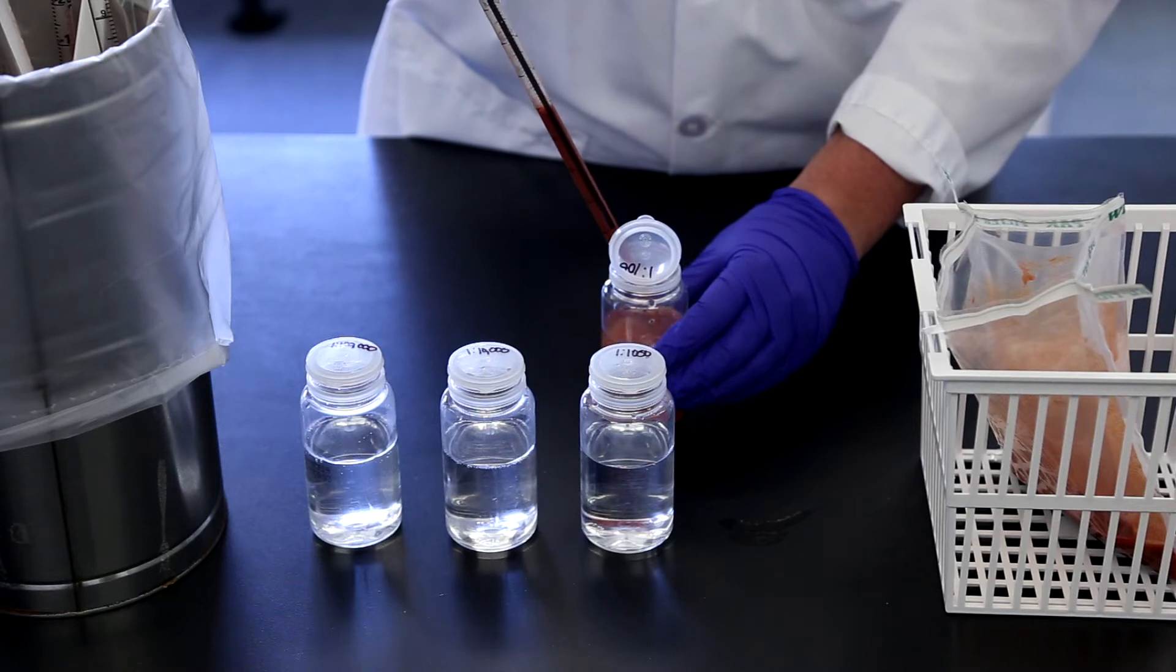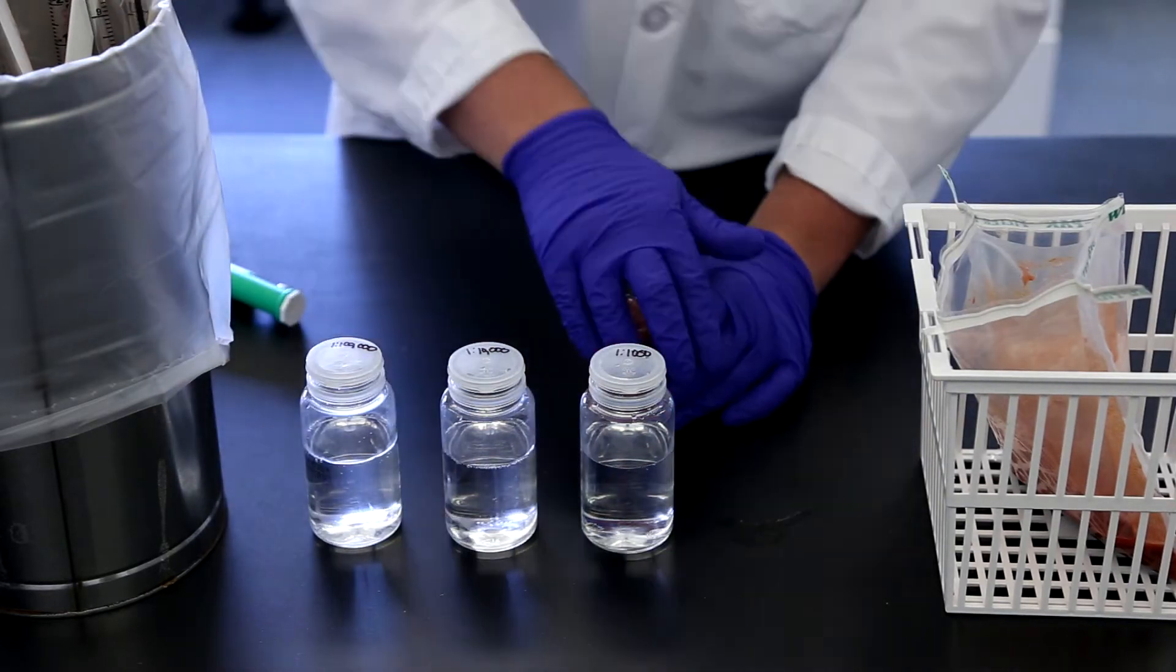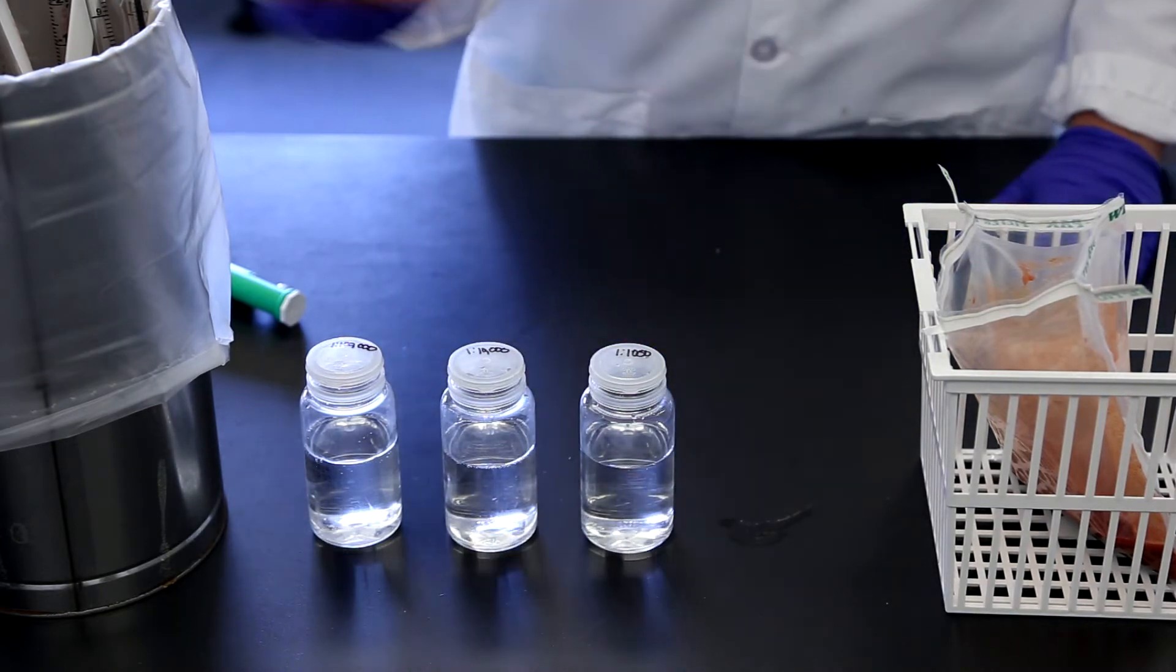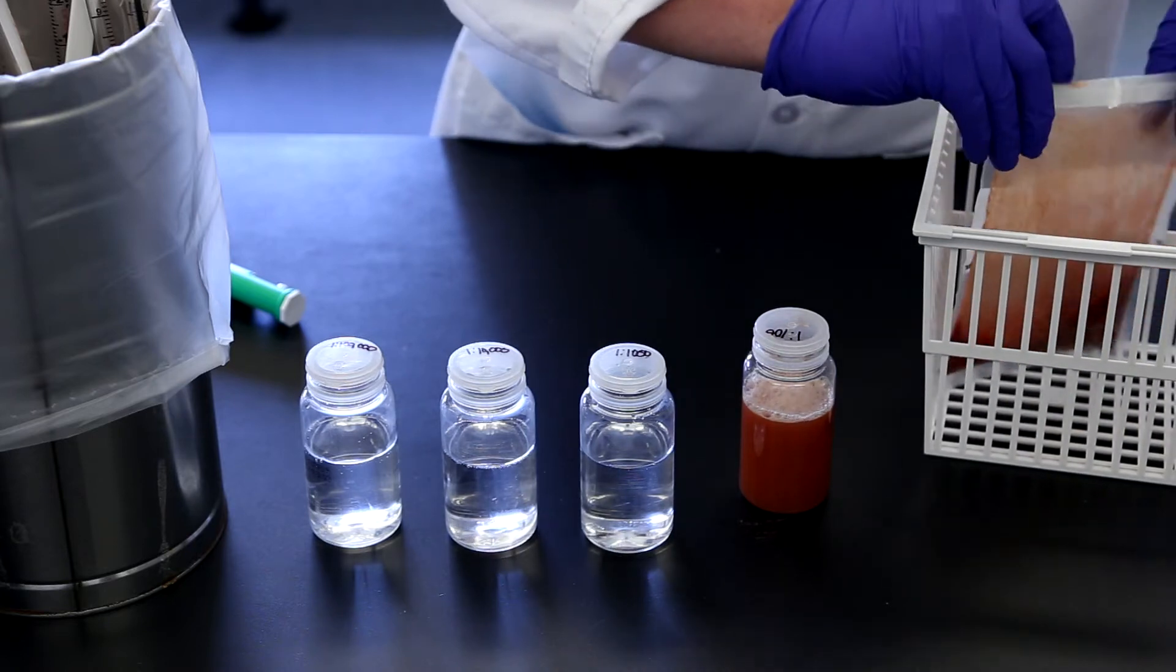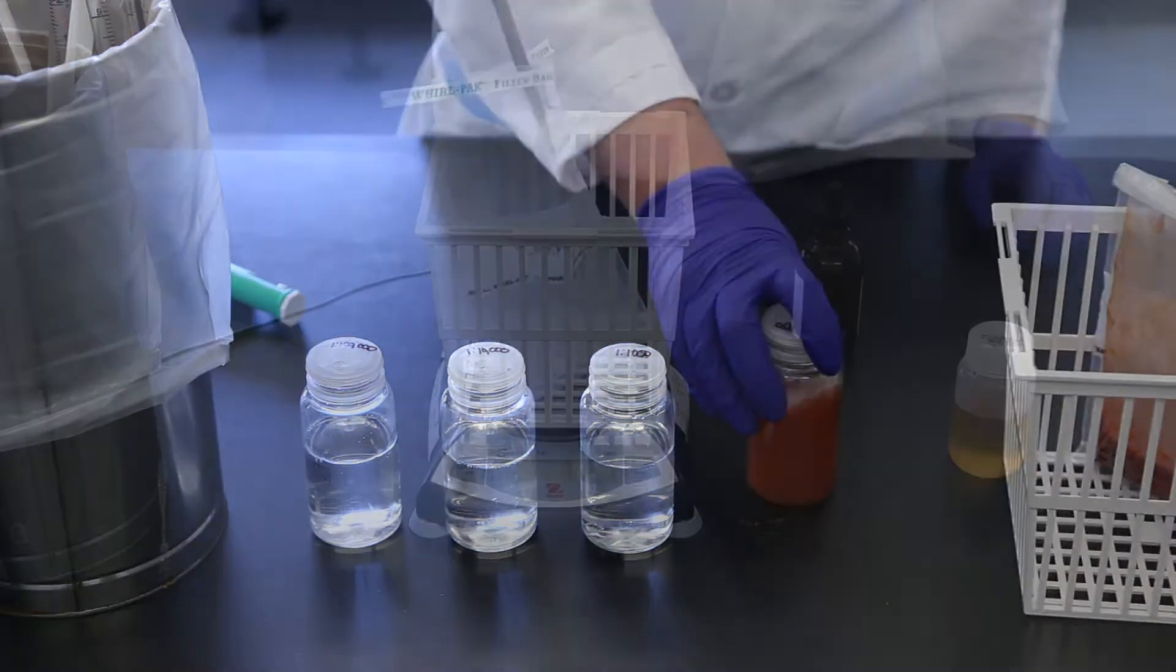Place 11 milliliters of your 1 to 10 sample into 99 milliliters of buffer. Homogenize thoroughly. You now have a 1 to 100 dilution. Repeat this process as necessary up to a dilution of 1 to 100,000 and beyond.